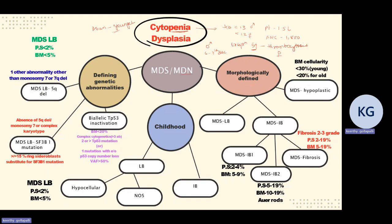Now coming to dysplasia — you should see dysplasia in the hematopoietic lineage, either erythroid, myeloid, or megakaryocytes. Dysplasia is divided into nuclear and cytoplasmic features. In the erythroid series, nuclear dyserythropoietic features include nuclear budding, multinucleation, megaloblastoid change, and karyorrhexis. Cytoplasmic features include vacuolations and ring sideroblasts. In granulopoiesis, nuclear features include hyposegmentation or hypersegmentation; cytoplasmic features include hypogranularity, hypergranularity, or Auer rods. In dysmegakaryopoiesis, you can see hypolobated, hyperlobated, multilobated, or micromegakaryocytes.